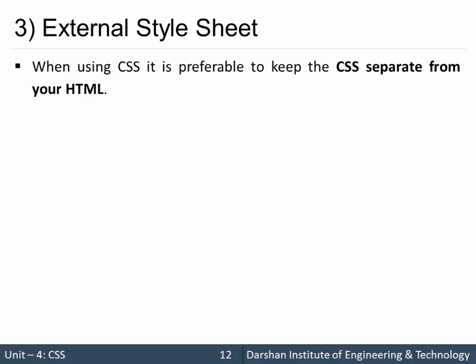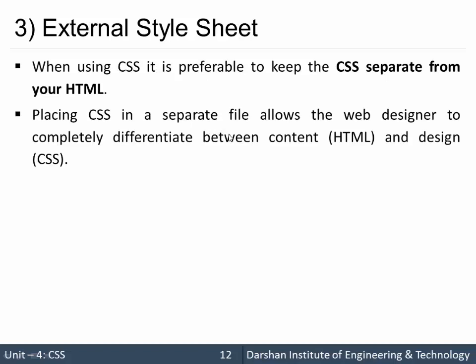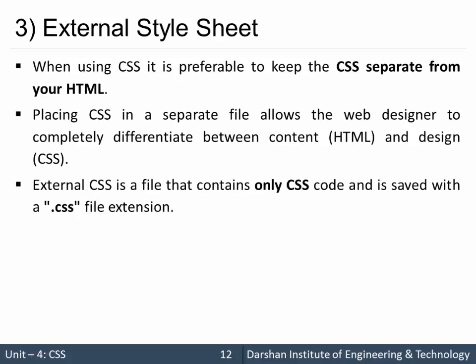The last and most recommended way of writing CSS is external stylesheet. When using this third way, it completely separates our HTML and CSS code. Placing CSS in a separate file allows the web designer to completely differentiate between content (HTML) and design (CSS), because not a single line of design code is written inside the HTML page. External CSS is a file containing only CSS code, saved with a .css extension.